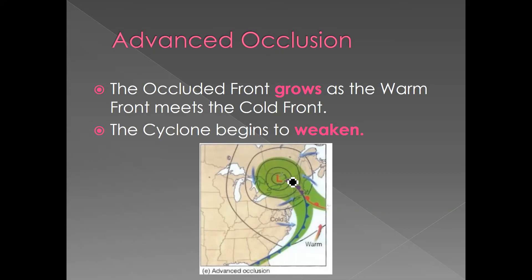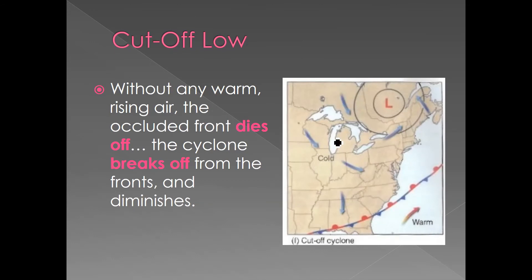Along this point, the warm front is quickly being overtaken by the cold front, and the warm sector quickly diminishes. Eventually, you no longer have an air mass boundary between warm and cold air anymore. The two fronts completely zip up and the air masses stop moving relative to each other. Without any additional warm air, we no longer have that warm rising air, therefore we don't have any more precipitation. This low breaks off from the front and becomes what's called a cut-off low, and eventually it just falls apart. We're back to square one again.